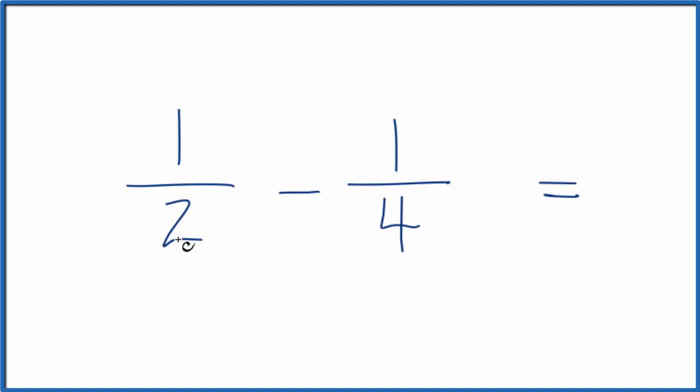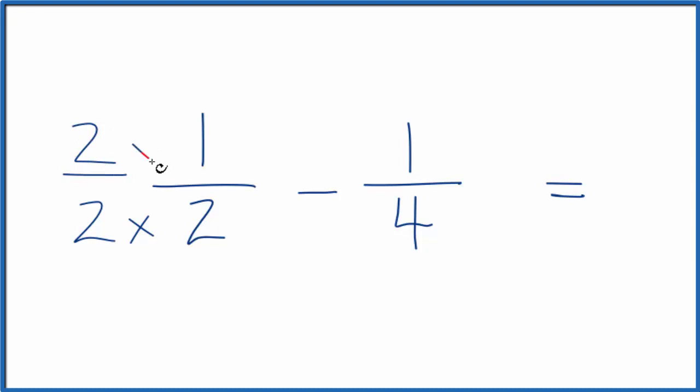If we look at this one half, two would go into four two times. So I'm going to multiply two times two. That'll give me four. But I have to also multiply the top by two. This way, two divided by two, that's just one. So I really haven't changed the fraction here. At least I haven't changed the value.